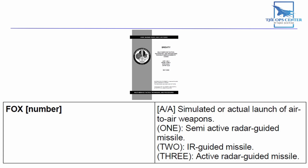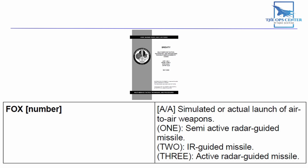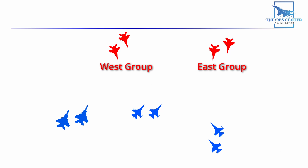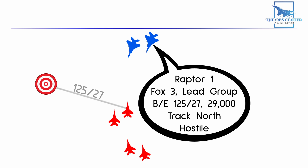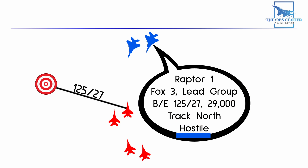Now let's go over how to do shot calls the right way. The Fox brevity code is not particularly useful without additional information like the identity of the shooter and who the weapon is directed at. So something like this: 'Eagle 2, Fox 3, West Group.' But you don't need to end there. If you really want to ensure there's no ambiguity, you can add amplifying information: 'Raptor 1, Fox 3, Lead Group, Bullseye 125-27, 29,000, Track North, Hostile.' Not only do we have a group label, but we have a bullseye reference, altitude, track direction, and a PID. There should be no mistaking who is being shot at here.